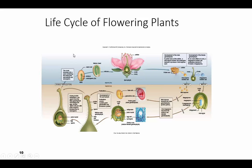That ovule will develop inside the seed, and it has the embryo in it. It's also got the endosperm in it, so it's going to be nourished by that endosperm. Look closely at this: the embryo sac down here is going to have seven cells in it — one of them is the egg, and the rest are going to be the polar nuclei.